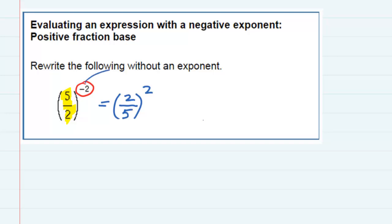So we've changed our negative exponent into a positive exponent just by flipping that fraction. And now that we have a positive exponent we can actually evaluate this because the whole thing is being squared, so that means we've got